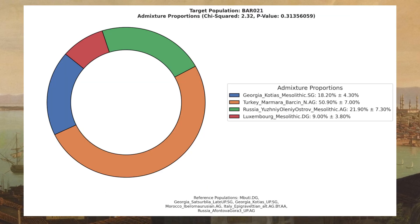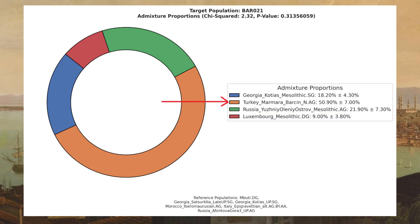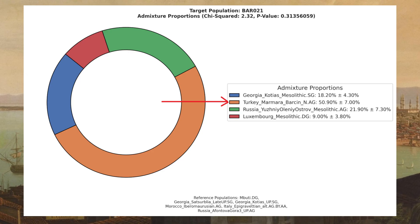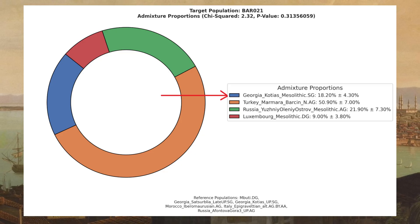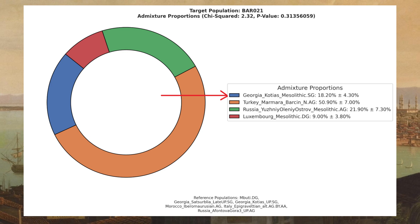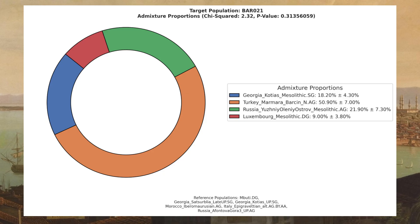Consult this Mesolithic ancestry breakdown computed with Admixtools 1. According to it, about 51% of his ancestry derives from the Anatolian farmers. This is typical for Southern Europe, but a bit low for Anatolia and Greece. His share of Caucasus hunter ancestry, at 18%, is very low — more typical of Iberians and Southern Italians, but very low for the Balkans and especially low for Anatolia. Mind you, this sample comes from Barsan, a town in West Anatolia.